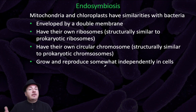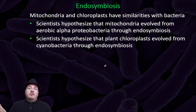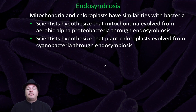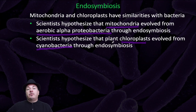Everything said about the mitochondria is also true of the chloroplasts. The chloroplasts have their own chromosome, and it looks like a prokaryotic chromosome. The chloroplasts have their own ribosomes that look like prokaryotic ribosomes. The chloroplasts divide whenever they want, not with the cell division of the cell. As a detail, the mitochondria likely evolved from an aerobic alpha proteobacteria through endosymbiosis, and the chloroplasts likely evolved from a cyanobacteria through endosymbiosis.